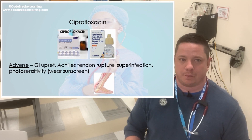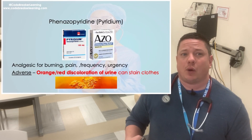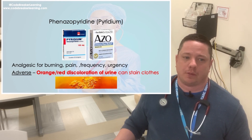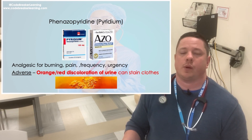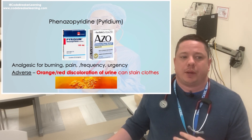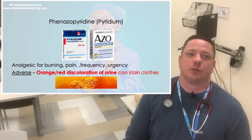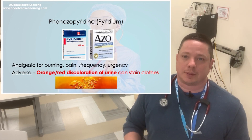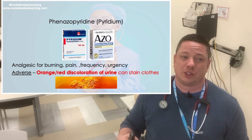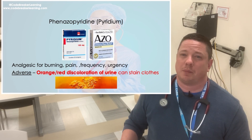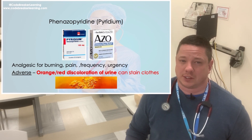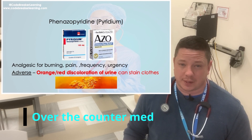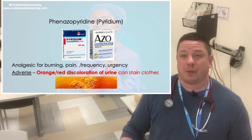The next medication is phenazopyridine, also known as Pyridium or AZO, which you can get over the counter. This is an analgesic given for the burning pain, frequency, and urgency related to UTIs. The key thing to educate the patient about is that this medication makes your urine orange or red and can stain your clothes.